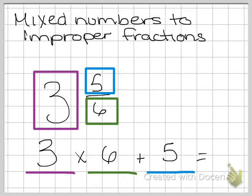So I know that 3 times 6 is 18, and then I need to do 18 plus 5, and that equals 23.